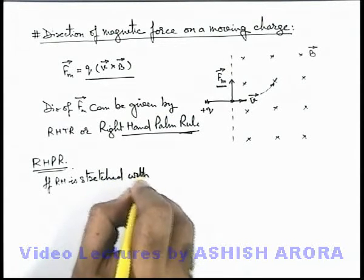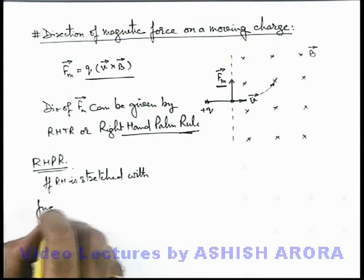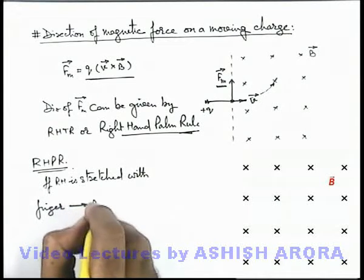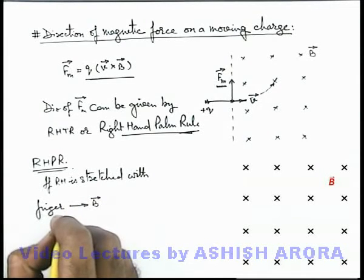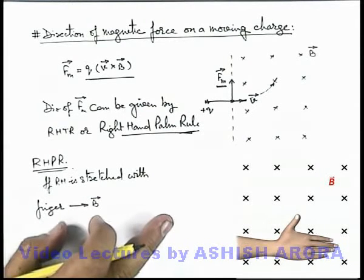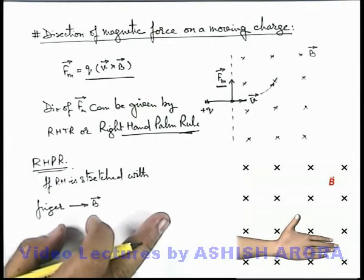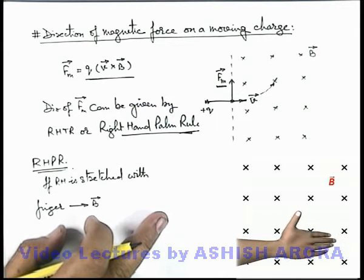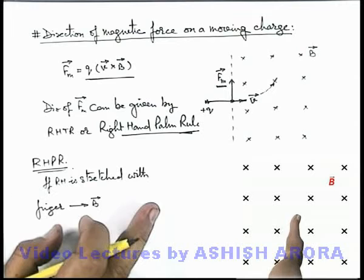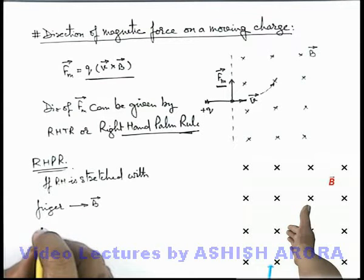with fingers pointing in the direction of b-vector. Here you can see this is the right-hand of someone, and here we are pointing the fingers in the direction of magnetic induction that is pointing inward.